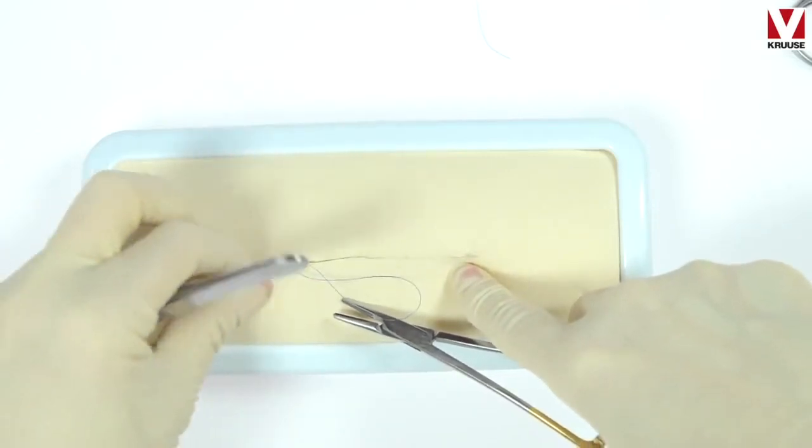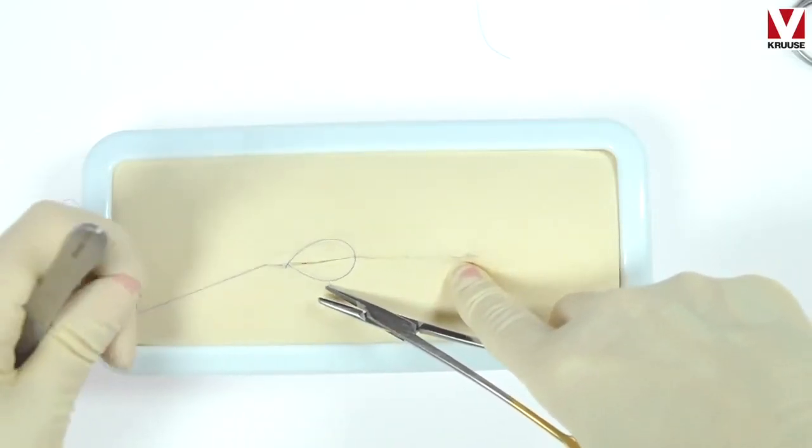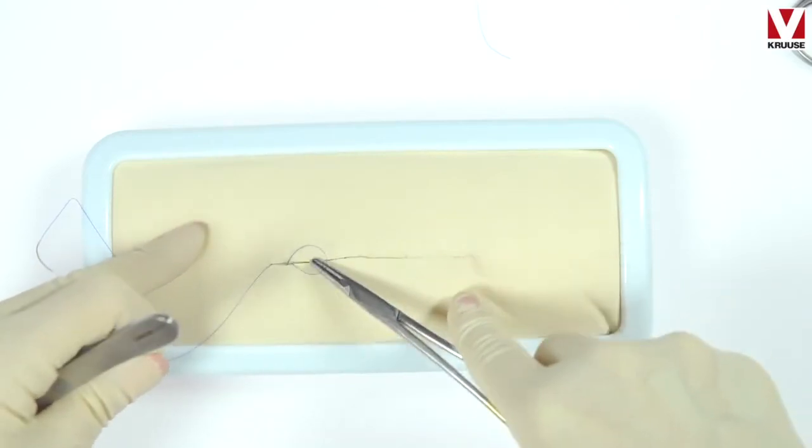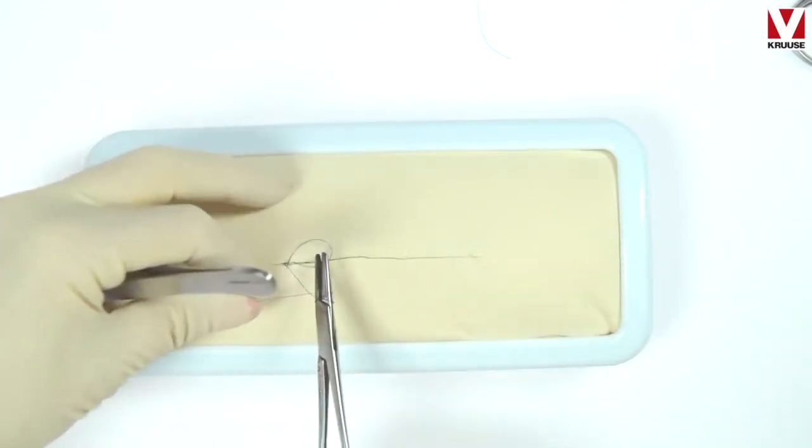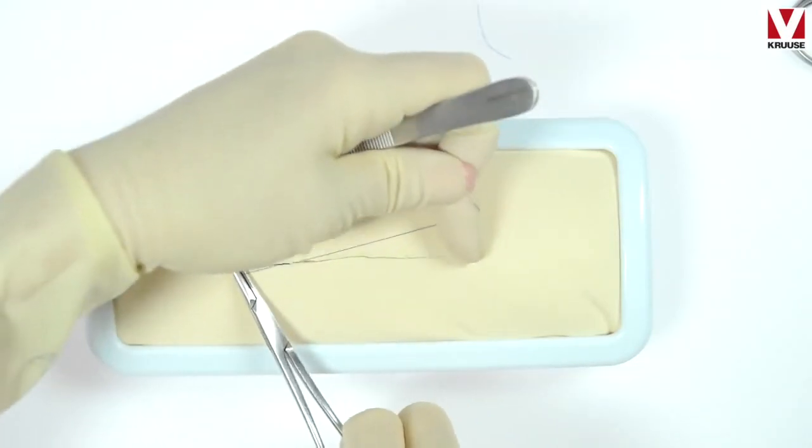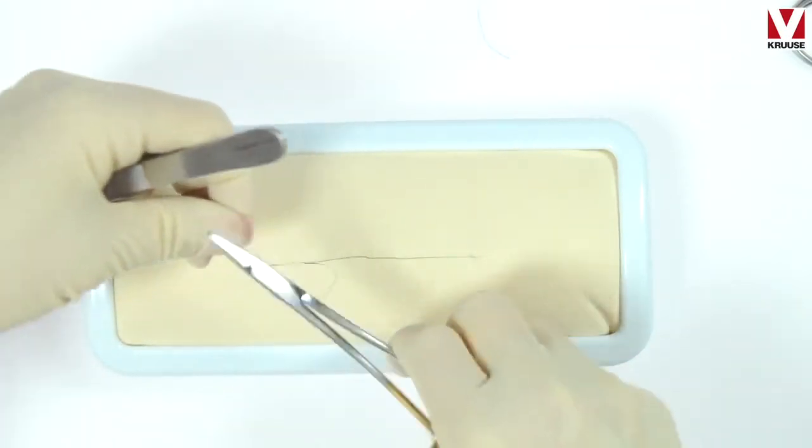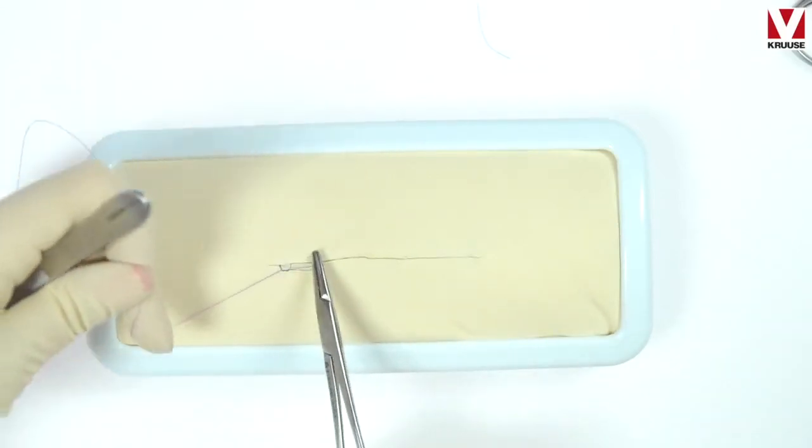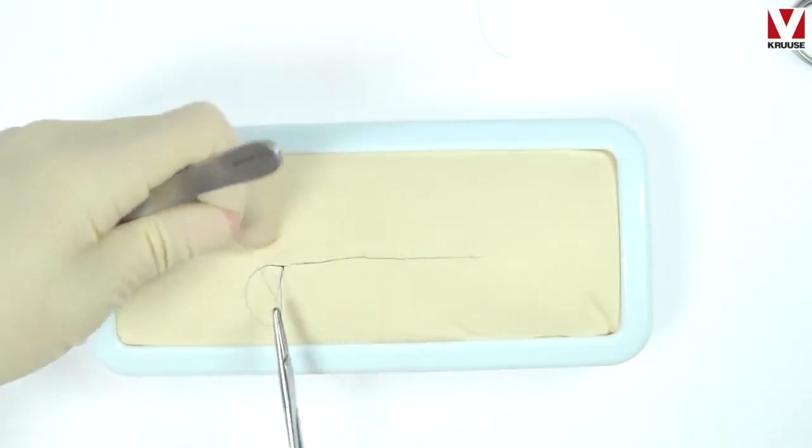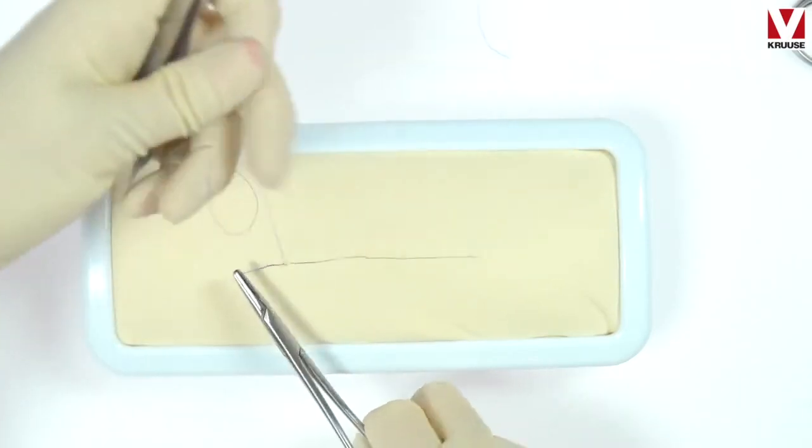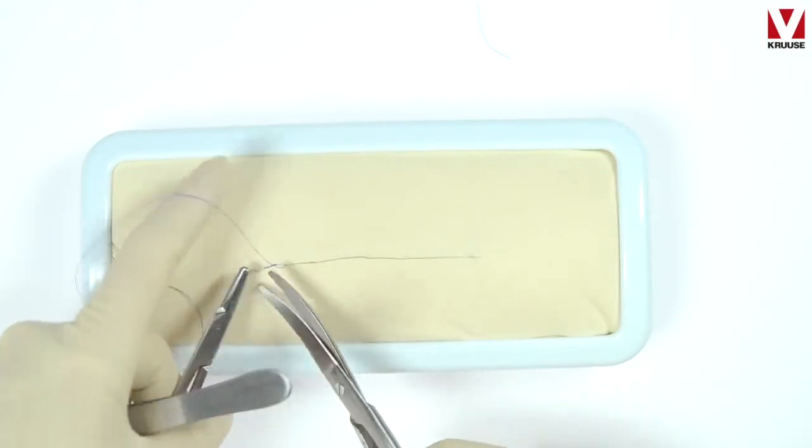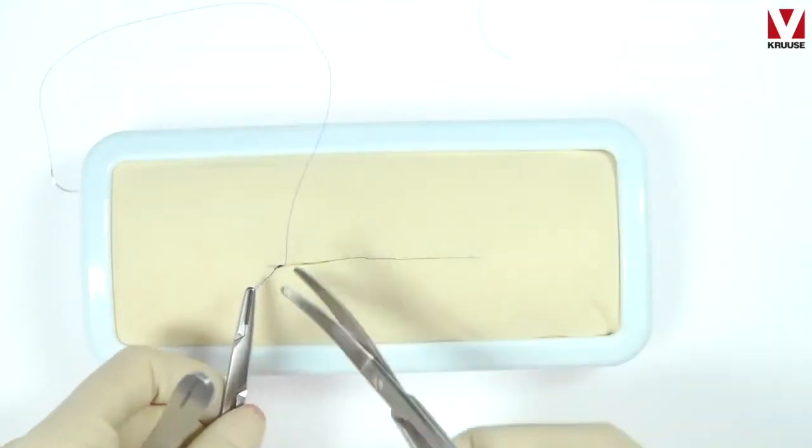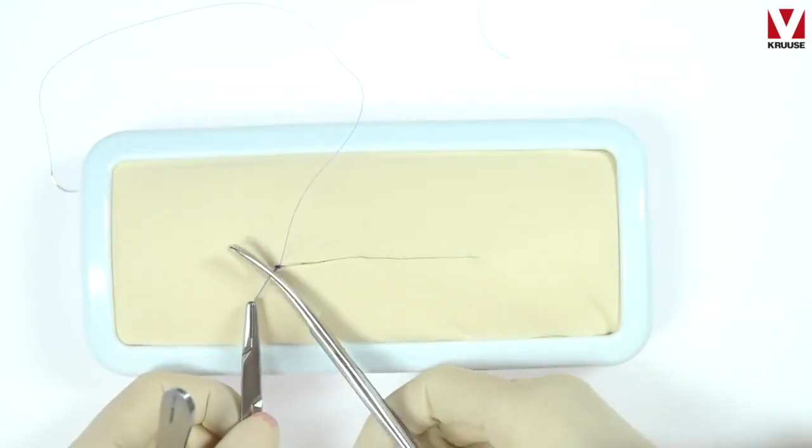And then I make a loop with the suture. This loop I will use to tighten my continuous pattern. And now I am allowed to grab the suture with the needle holder because I will not use this piece of suture. I will cut it away. So I cut but only the loop, not the rest of the suture with the needle. Cut the loop off with short suturing end.